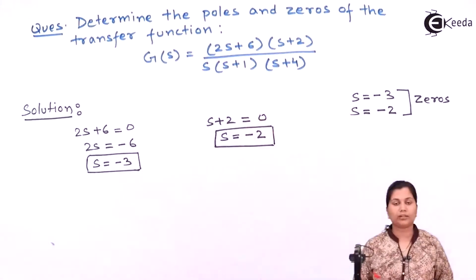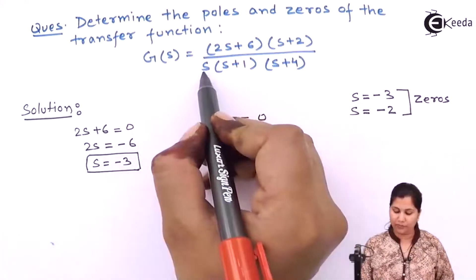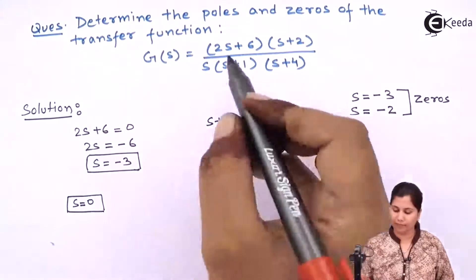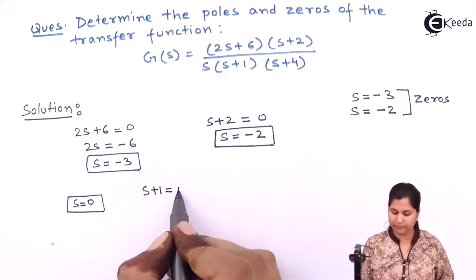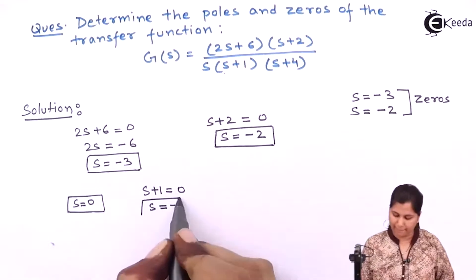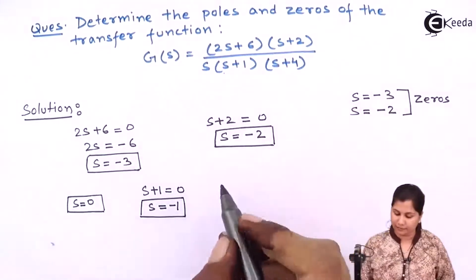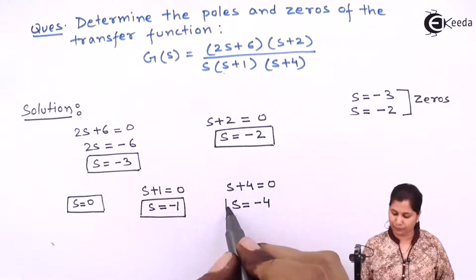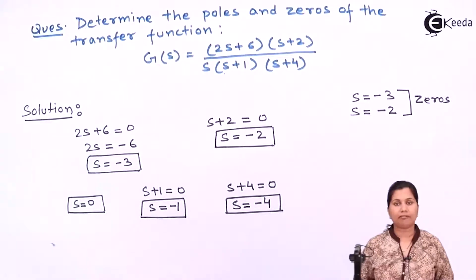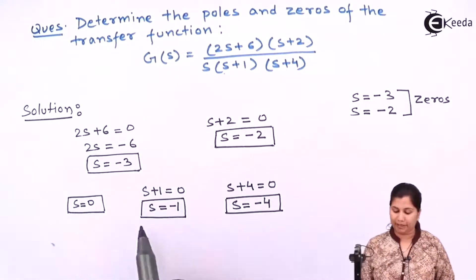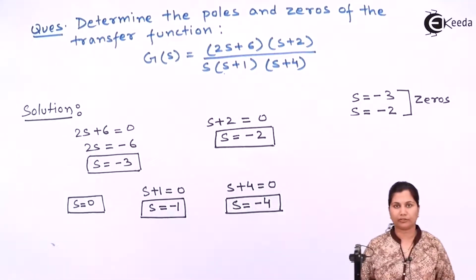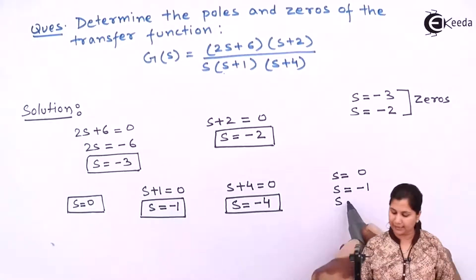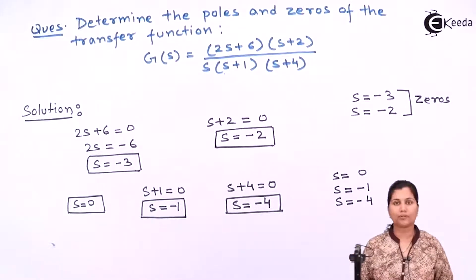Now let's find out the factors of the denominator polynomial. First, we equate s to zero, giving s = 0. Next, we equate s + 1 to zero, giving s = -1. Third, we equate s + 4 to zero, giving s = -4. These are the three factors of the denominator polynomial, and the factors of the denominator polynomial are the poles of the transfer function. So the poles are s = 0, s = -1, and s = -4.